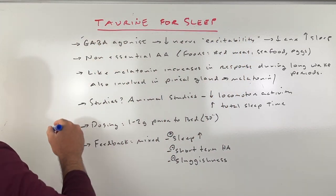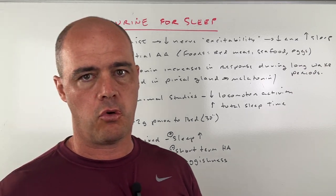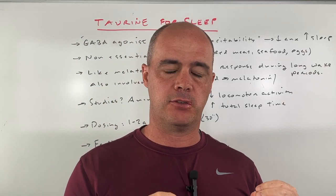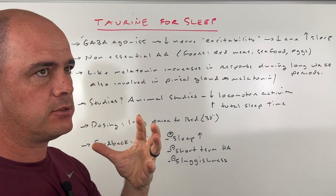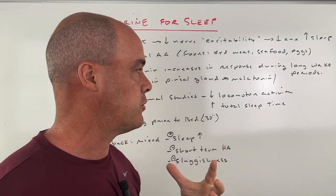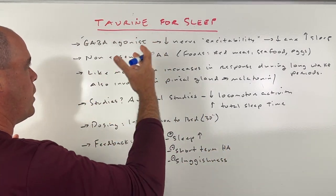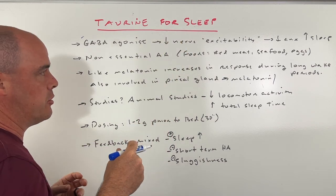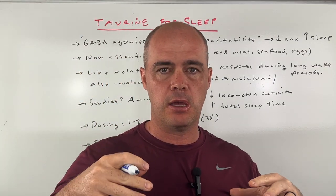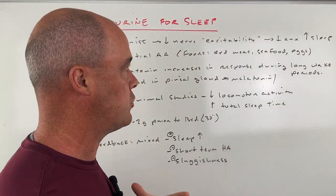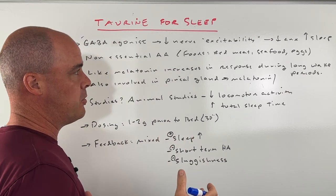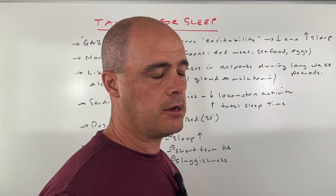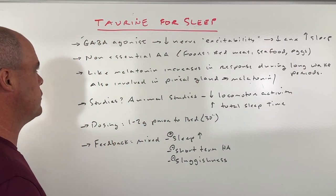So we know from the research that taurine is a GABA agonist. And what that basically means, GABA is an excitatory neurotransmitter. So when it's an agonist, we can see nerve excitability actually decrease. And that results in many people feeling a decrease in anxiety and also an increase in sleep.